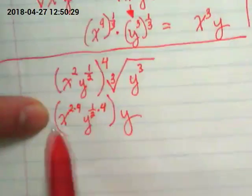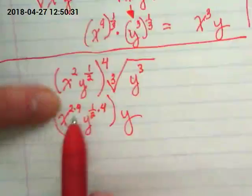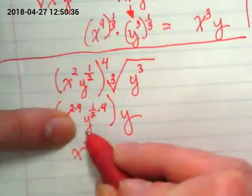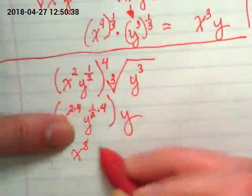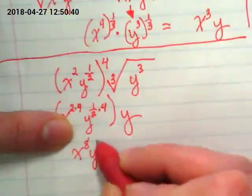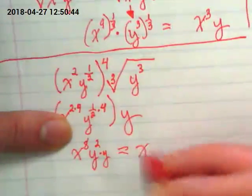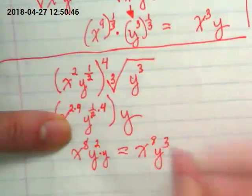So, now I'm going to simplify this. What's x, two times four? X to the eight. What's y, one-half times four? Y to the two. And then there's another y here, so we're going to rewrite this as x to the eight, y to the third.